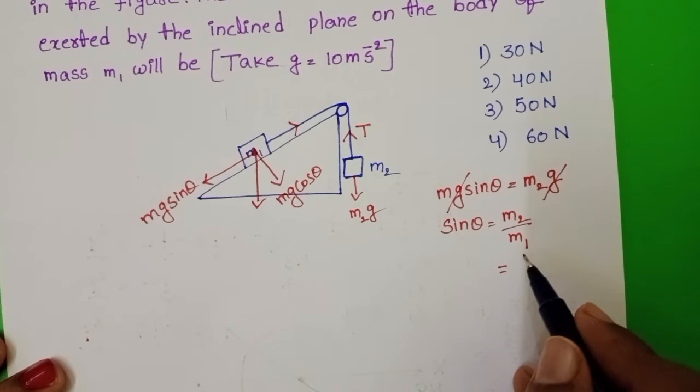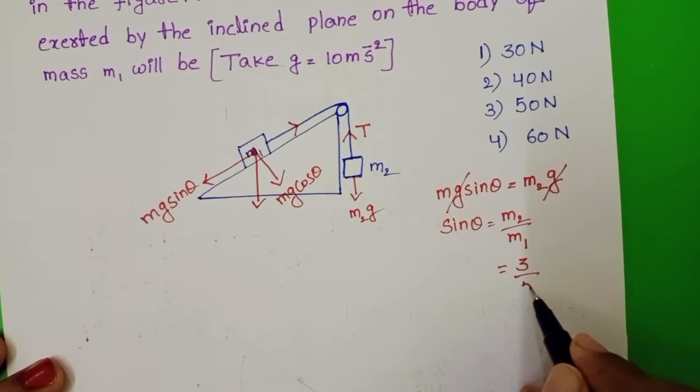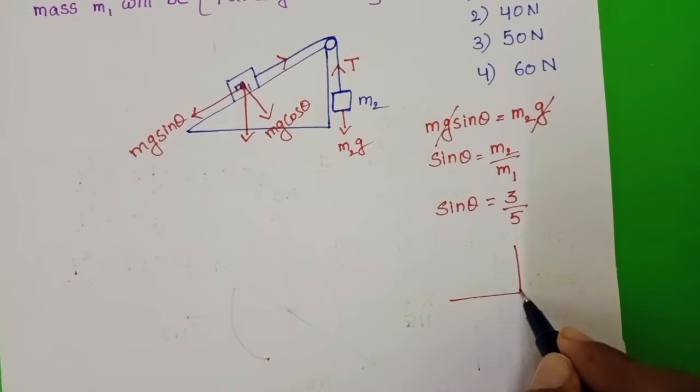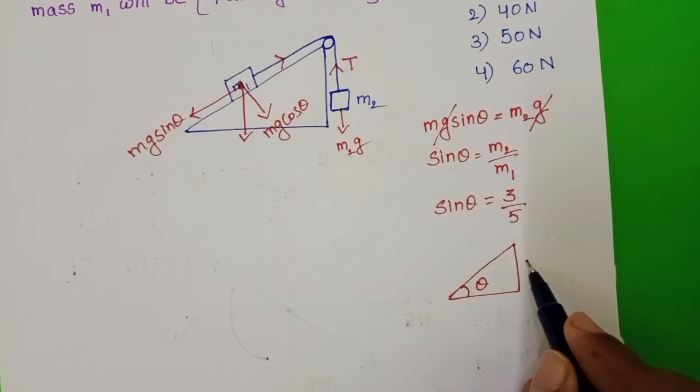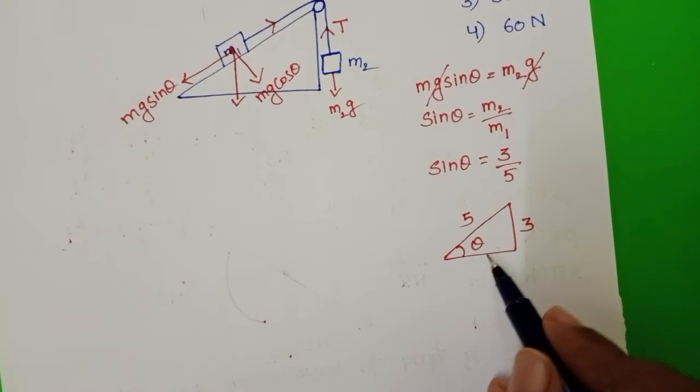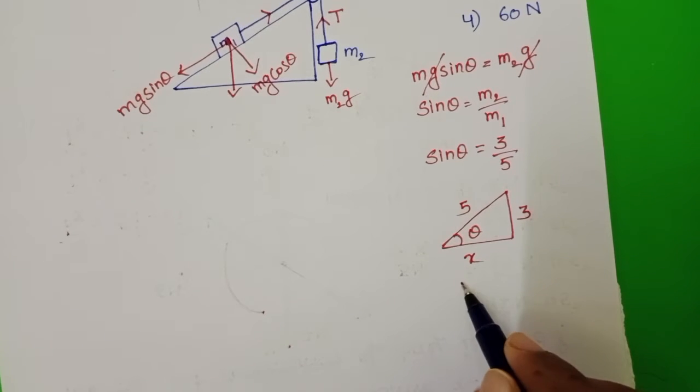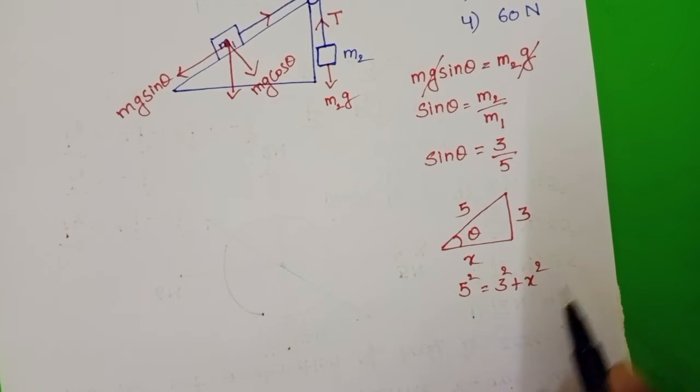Mass of the second block is 3kg and mass of the first block is 5kg. Sin theta equals 3 by 5. Opposite side 3 and hypotenuse is 5. Let us find out the adjacent side.